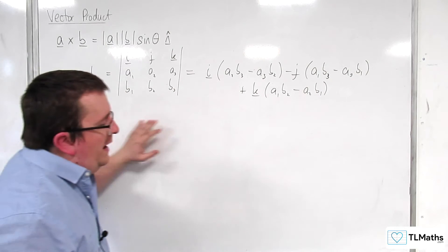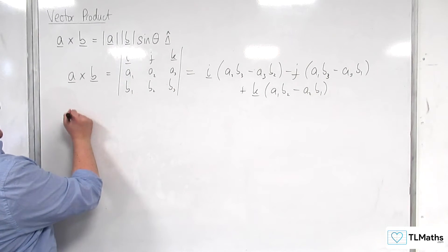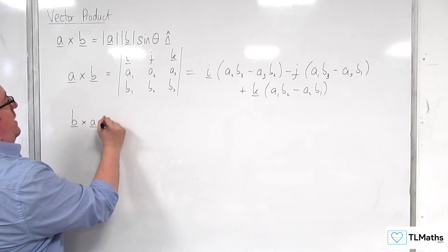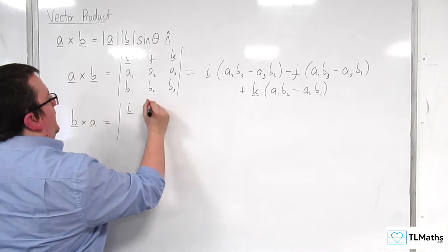Okay, so if we look at that, and then we look at B cross A, so we do it the other way around, let's see what we get and compare.